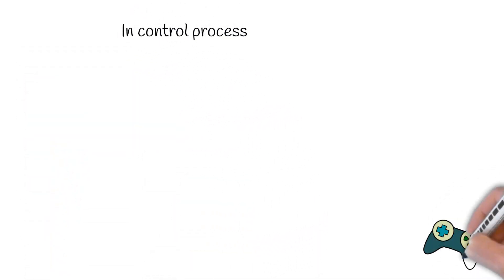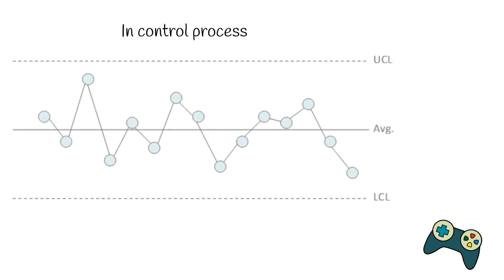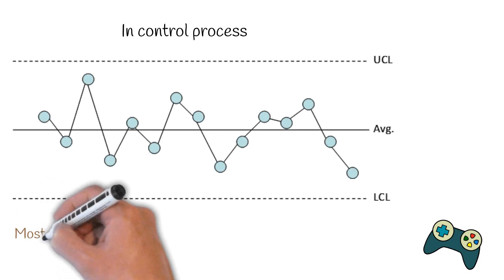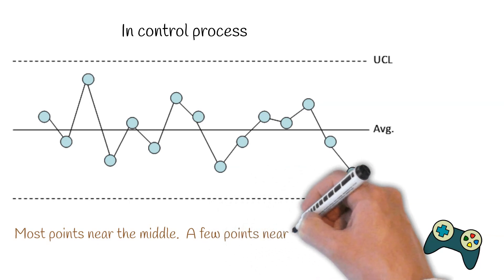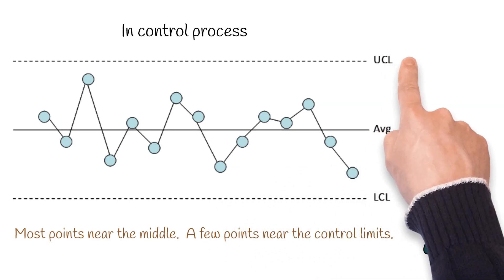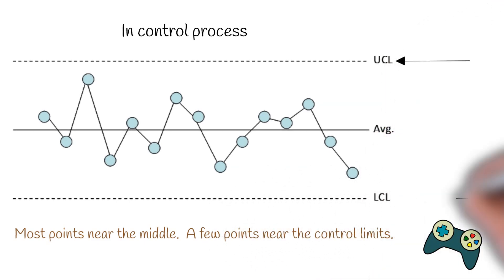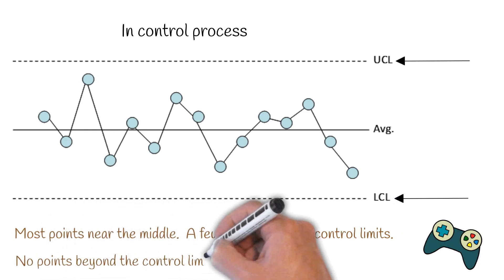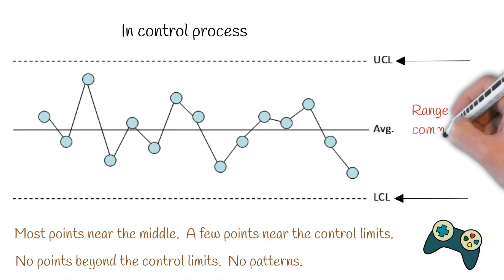So what does an in control process look like? It's going to look something similar to this. You're going to have most points near the middle, the average. A few points near the control limits, the upper control limit and the lower control limit, and you're not going to have any points beyond them and no patterns.